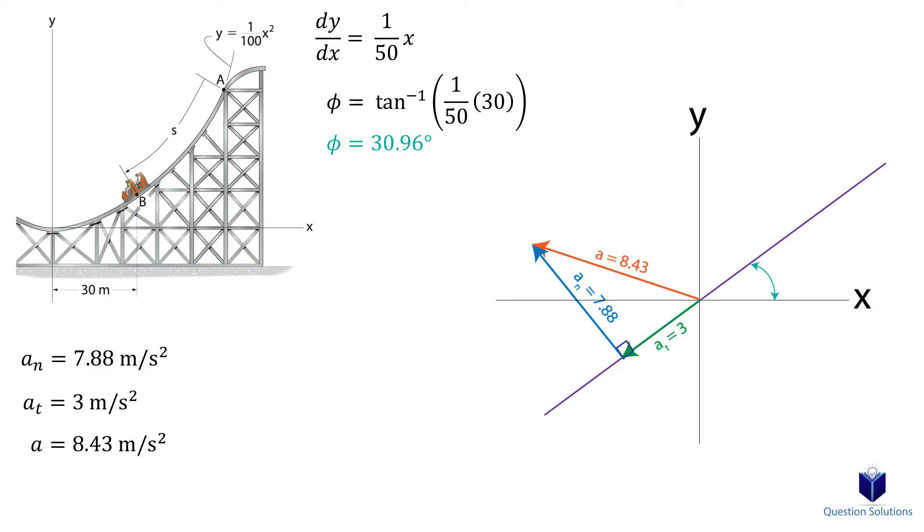So what is the angle that the magnitude of acceleration makes with the tangential acceleration? Well, we can figure that out in many ways, because we know the values of all the sides of the triangle. So you can use sine, cosine, or tangent to find it. I will use sine.